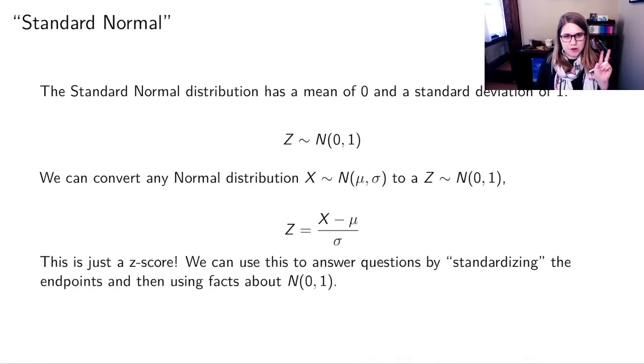There's this idea of the standard normal. There are infinitely many normal distributions with different means and different standard deviations, but the standard normal distribution has a mean of zero and a standard deviation of one. We often call this the z-distribution. Don't ask me why it's a z, that's just the letter we've chosen. So the standard normal, z, follows a normal distribution with mean zero and standard deviation one.